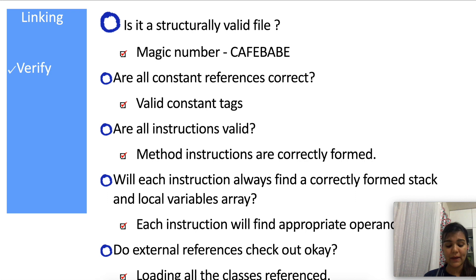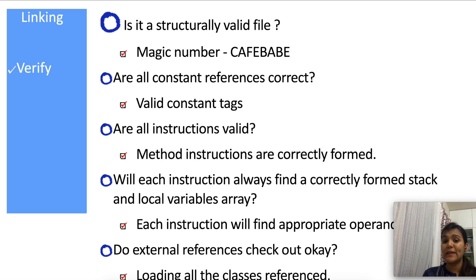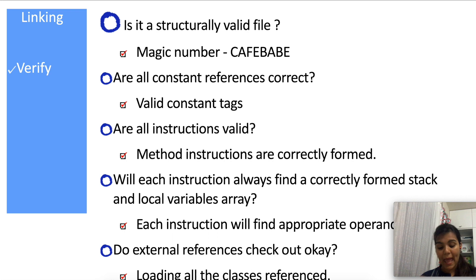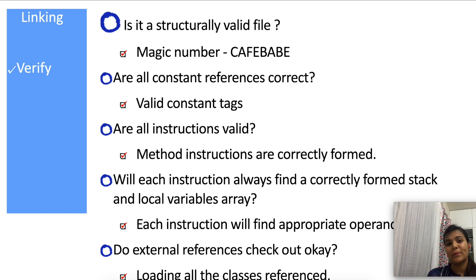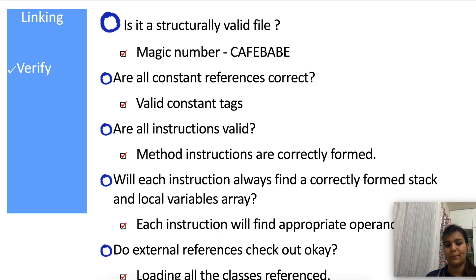What verification basically does is ensure class files are loaded to follow certain rules. These rules guarantee that the program cannot get access to the fields and methods it is not supposed to access. This ensures a lot of security through strong syntactic and structural constraints. Verification asks basically five questions. First: is it structurally a valid file? There's a magic number called 'cafe babe' which checks whether the first few bytes of the file match this magic number, so we know it's not a garbled file or a file never intended to be a .class file. Second: are all constant references correct?